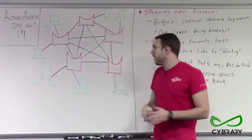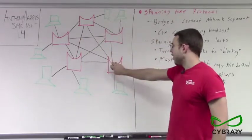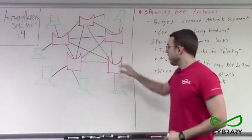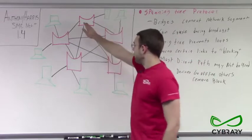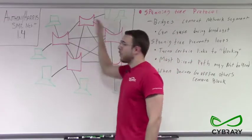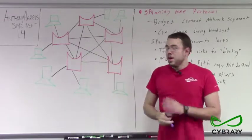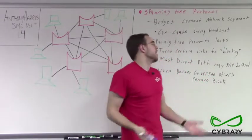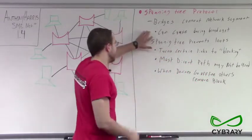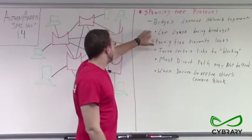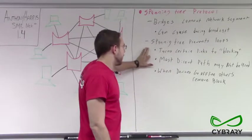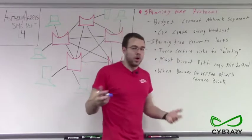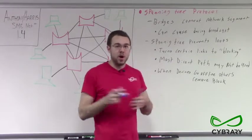This is good because if one bridge goes down, all of our other bridges can still communicate with each other. Or if one bridge needs to communicate with another, it doesn't have to go all the way around. But the downside is if our bridges form any loops, we may have situations where our network goes down because of broadcast packets.